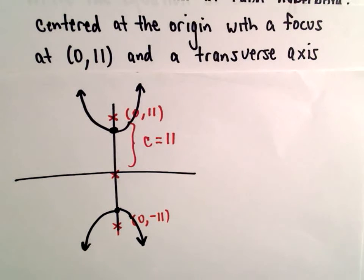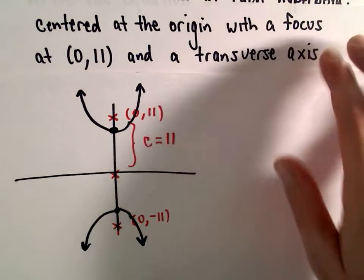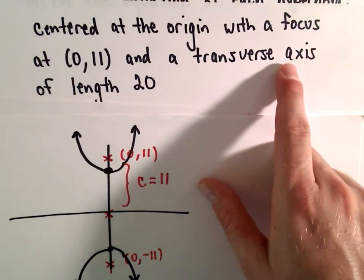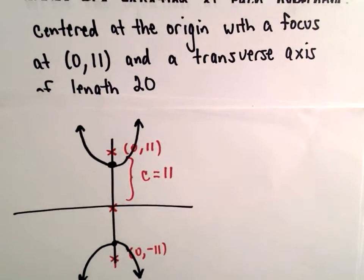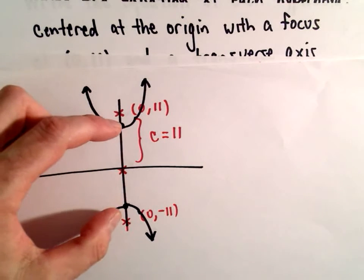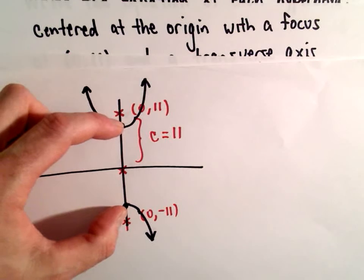And where exactly are those vertices located? We can use this information about the transverse axis to figure that out. Because the transverse axis is the segment that connects the vertices.